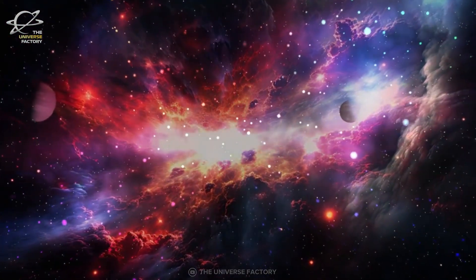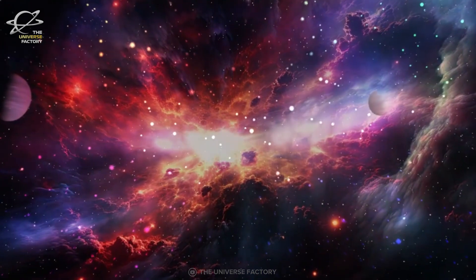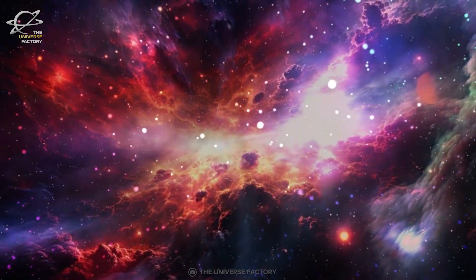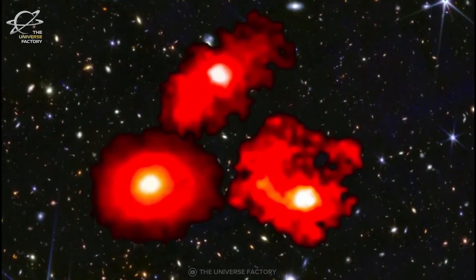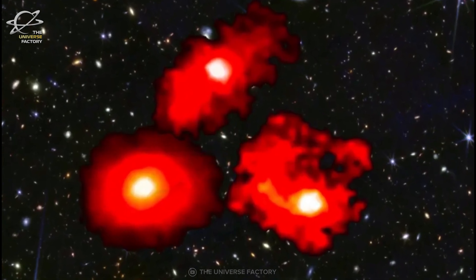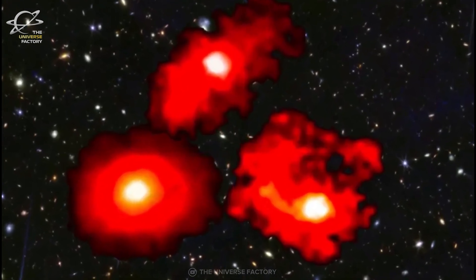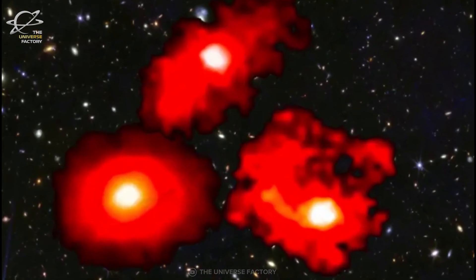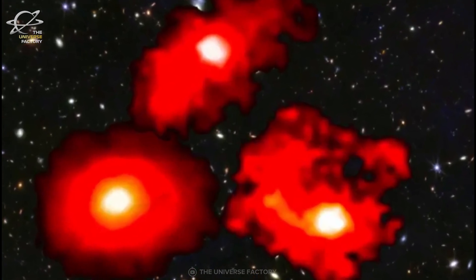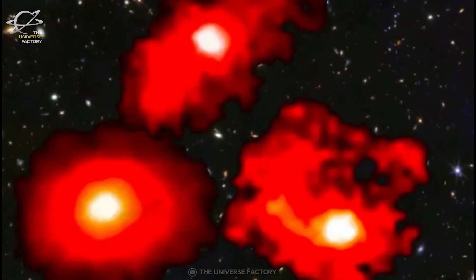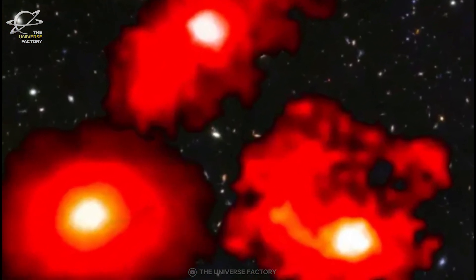Researchers have long believed that star formation in the early universe was a slow and steady process. But these red monsters are evidence of a cosmic star factory running at full throttle. This means we might have to rewrite our models of how galaxies evolve and grow, especially in the chaotic primordial universe.